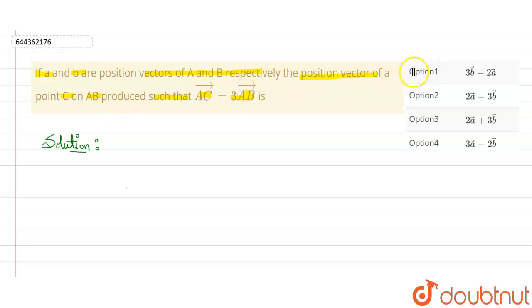Four options are given here. We have to find C vector and check which of the options is matching. Here it is given that position vector of point A is given as A vector. Similarly, position vector of point B is given as B vector.